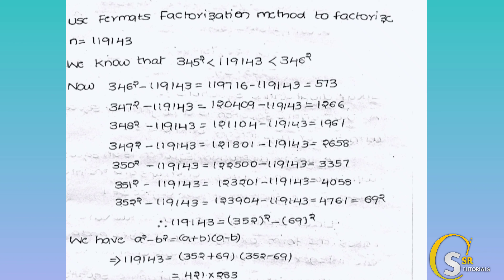Next, try 347. 347 squared minus n: 347 squared is 120409, minus 119143 equals 1266. We check if 1266 is a perfect square — its square root is a decimal, not a perfect integer, so we continue.